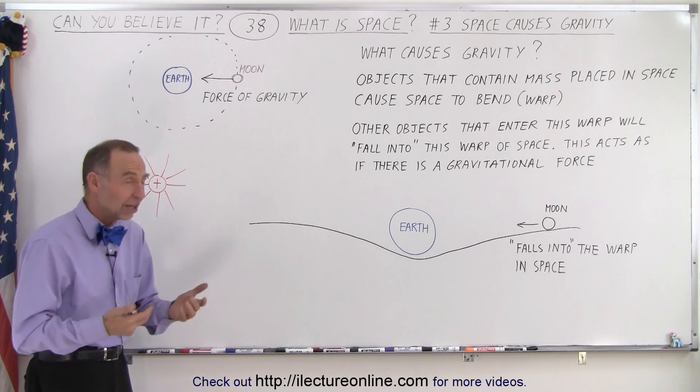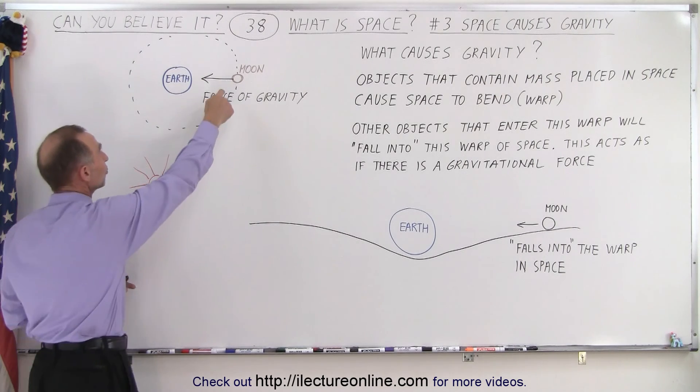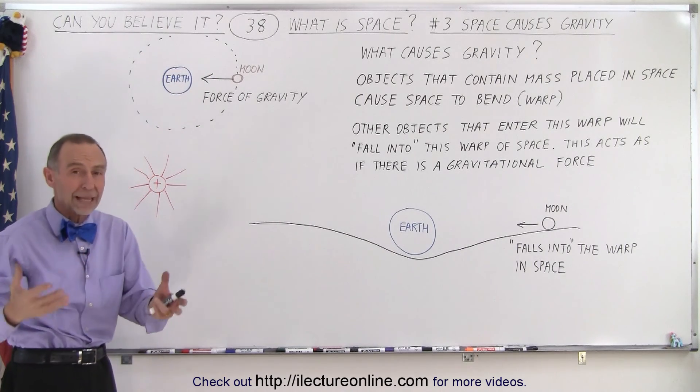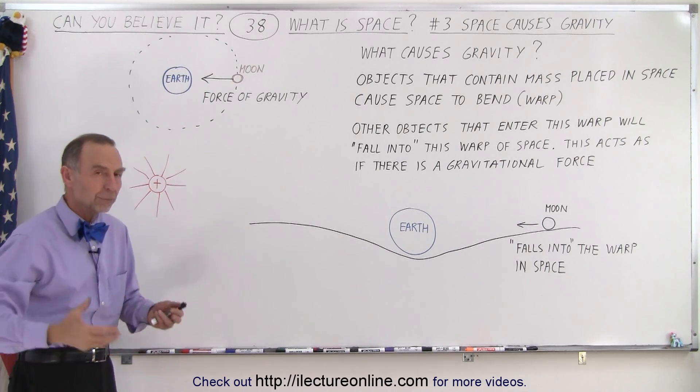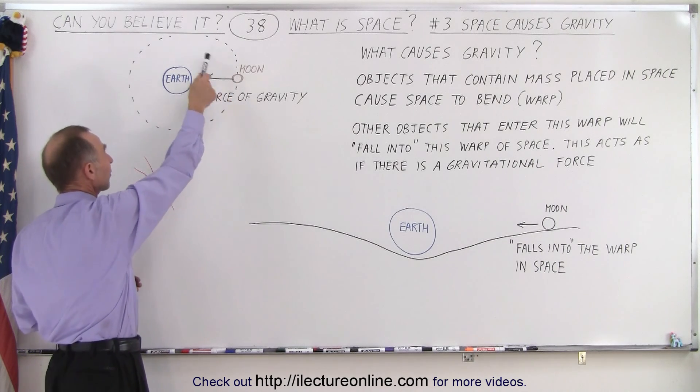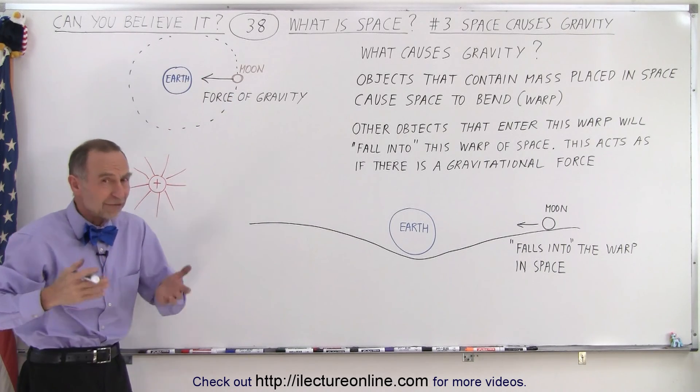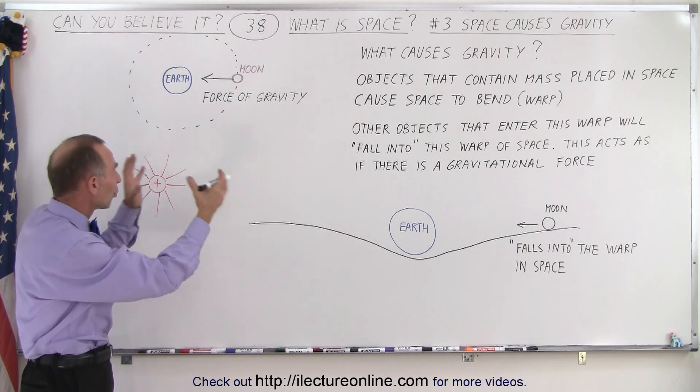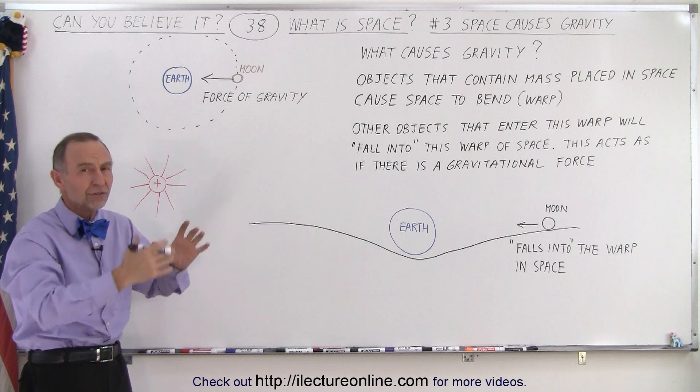We have known since the days of Kepler that objects will travel around other objects. For example, he discovered that the planets traveled around the sun in elliptical orbits, and then we surmise that the moon travels around the earth for the same reason, even if we didn't know what that reason was. There seems to be some sort of force of attraction causing it to do that.